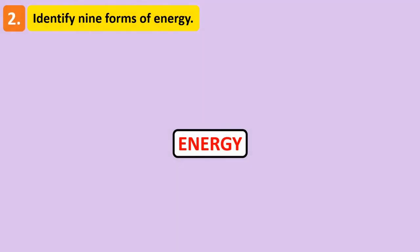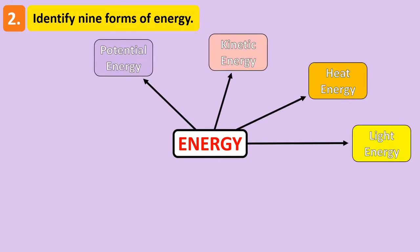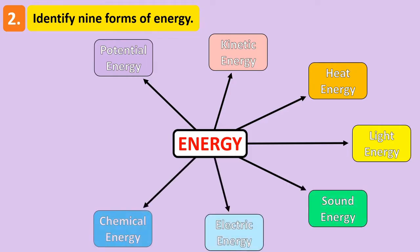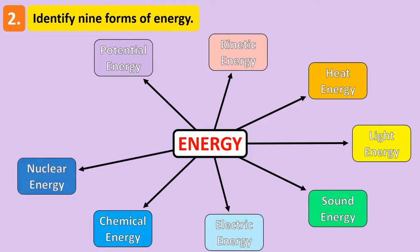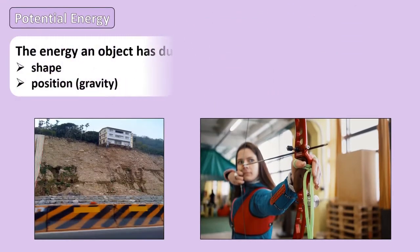There are many different forms that energy can take. In this video we'll look at nine different forms of energy. These include potential energy, kinetic energy, heat energy, light energy, sound energy, electric energy, chemical energy, nuclear energy, and magnetic energy. Let's take a look at each of these forms one by one, beginning with potential energy.